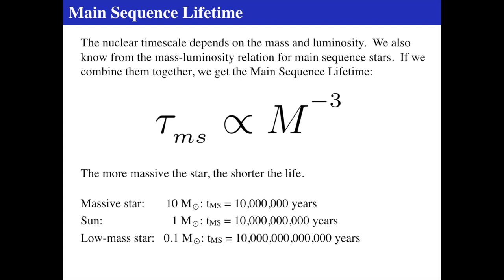As a side note, in British usage 'billion' means a million million (10¹²) while in American usage 'billion' means 10⁹ — so what Americans call a trillion, Brits call a billion. To keep things straight: massive stars live about 10 million years, the Sun lives about 10 billion years, and a low-mass star lives about 10 trillion years — all because of how fast it fuses hydrogen in the core.